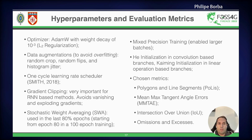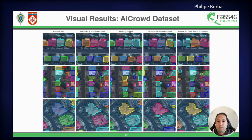We employed mixed precision training, which enabled larger batches in our GPUs. We used He initialization in convolutional-based branches and Xavier initialization in linear operation-based branches. As evaluation metrics, we chose PoLiS — Polygons and Line Segments — which is a polygon similarity metric. When two objects have a PoLiS of zero, it means they are the same object; the more different the objects are, the larger the PoLiS value. We also used the Mean Max Tangent Angle Error (MMTAE), intersection over union, and omission-excess metrics.